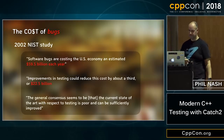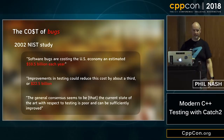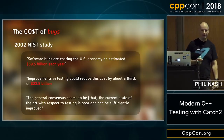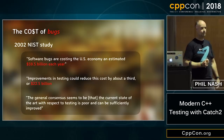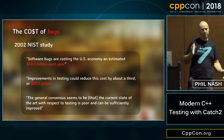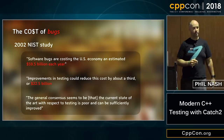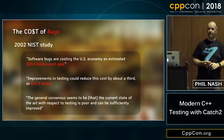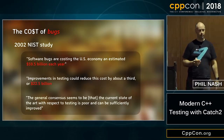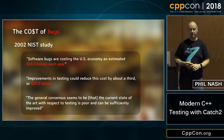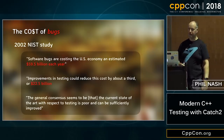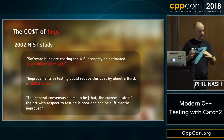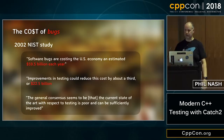The general consensus from that study was that the current state of the art with respect to testing is poor and can be sufficiently improved. Bear in mind this was in 2002, just before the start of the Agile revolution. The state of testing has improved since then, but I think we still have a little way to go — particularly in C++, where testing hasn't been as big a part of the ecosystem as in other languages.